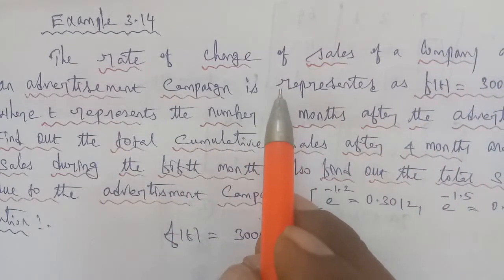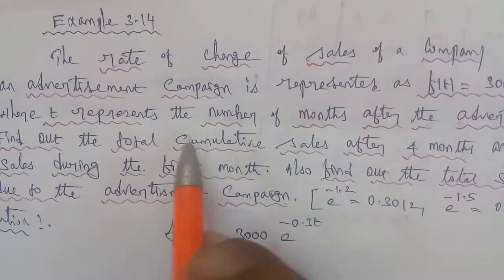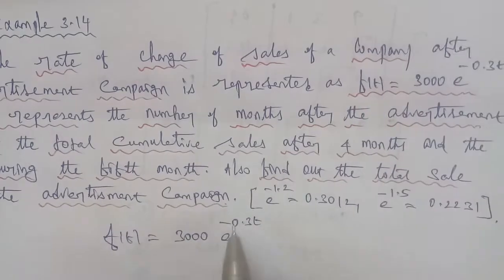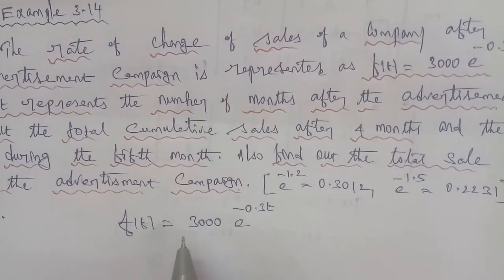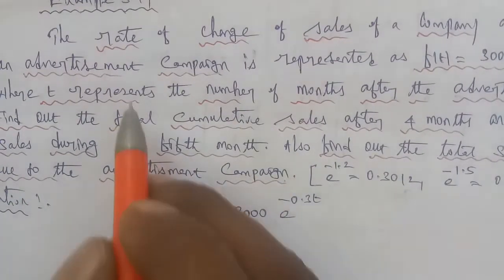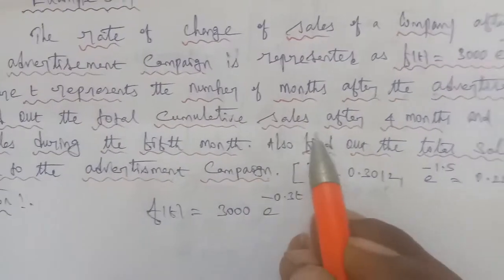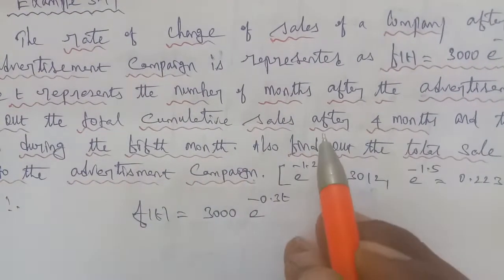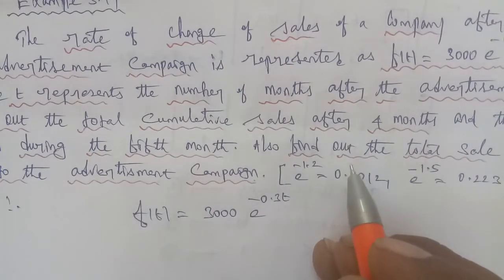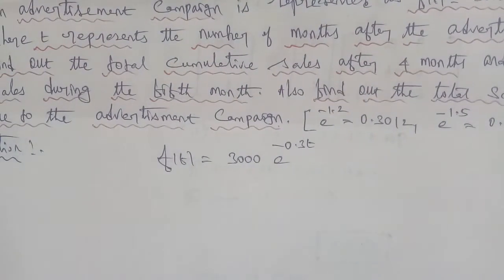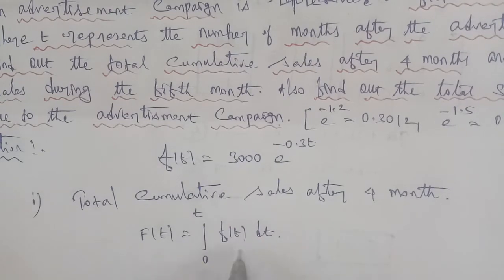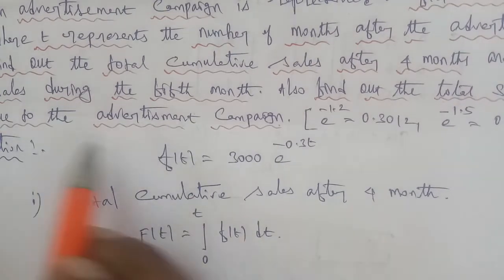The company advertisement campaign rate of change equation is f(t) = 3000 e^(-0.3t). For the first question, find out the total cumulative sales after four months. The formula for total sales is capital F(t) = integral from 0 to t of f(t) dt.